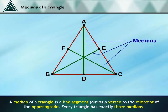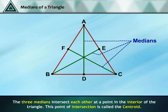A median of a triangle is a line segment joining a vertex to the midpoint of the opposing side. Every triangle has exactly three medians. The three medians intersect each other at a point in the interior of the triangle — this point of intersection is called the centroid.